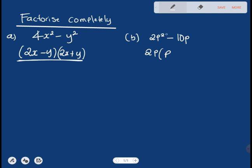So that when I expand, it takes me back to 2p squared minus 2 into 10, which will make 5. Nothing else here.